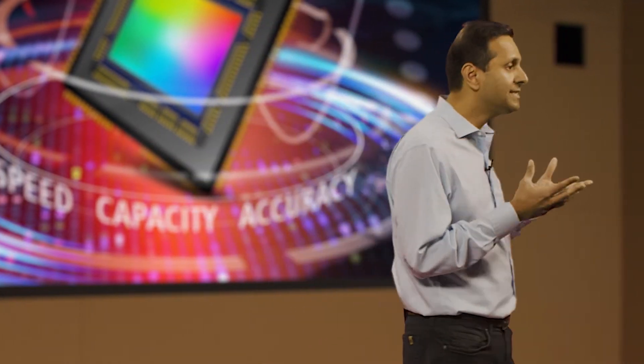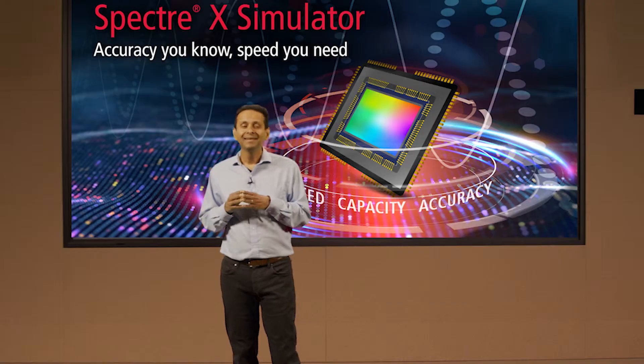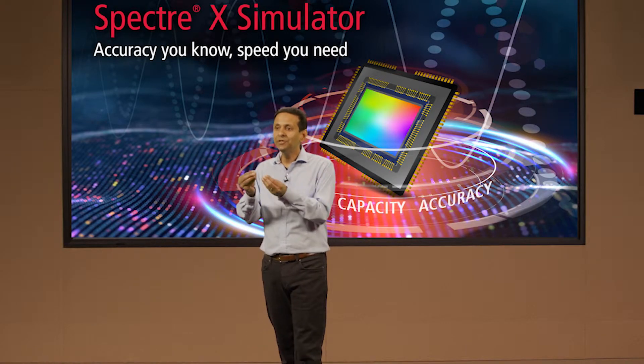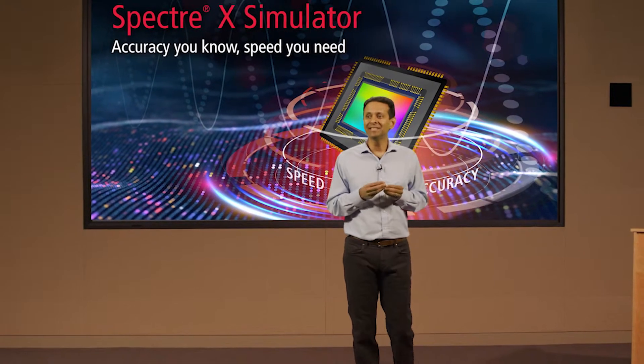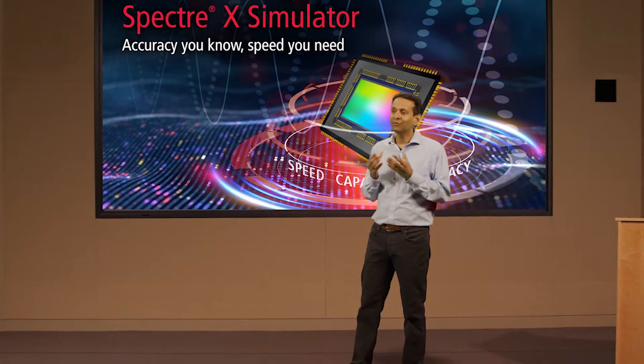Why? Today's analog circuits go into mission-critical applications like self-driving cars. They also go into many low-power devices like the mobile phone in your pocket. These low-power devices need to operate in many different power-saving modes and at very low voltages. Mission-critical circuits need to work flawlessly under all circumstances. These requirements mean that you need to do extensive verification of analog circuits, and circuit simulation is the core engine for analog verification.